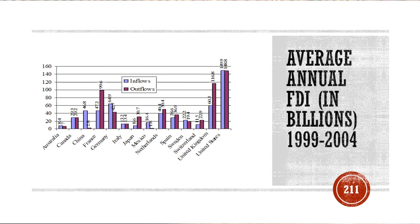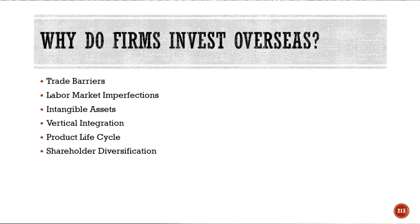When investments are done across borders, greenfield investments means building a new facility from the ground up. Cross-border acquiring means buying businesses or factories — you might buy an existing factory and expand the business to make it more efficient. Greenfield investments are generally very welcome, whereas cross-border acquiring of assets is typically unwelcome. People get very concerned about that, and it's typically used in politics.